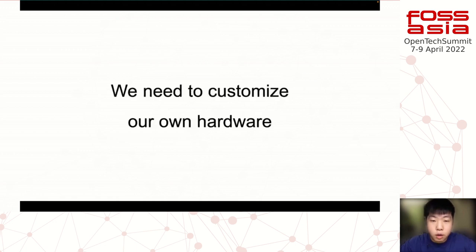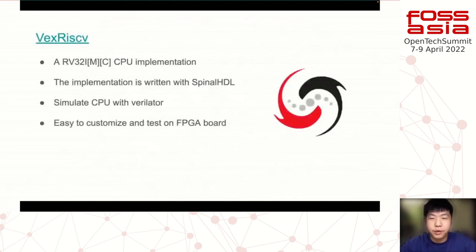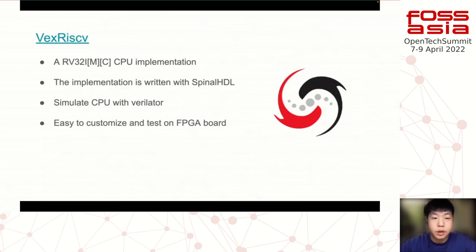That brings us to VexRiscV, which is an RV32INC CPU implementation. 'I' stands for integer, 'N' stands for multiplication, division, and modular instructions, and 'C' stands for compact instructions. The whole implementation is written with SpinalHDL, which is a hardware description library.